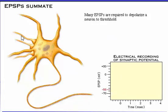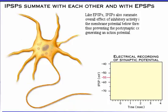Many excitatory postsynaptic potentials are required to depolarize a neuron to threshold. Like excitatory postsynaptic potentials, inhibitory postsynaptic potentials also summate. The overall effect of inhibitory activity is to keep the membrane potential below threshold, thus preventing the postsynaptic cell from generating an action potential.